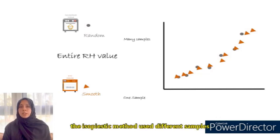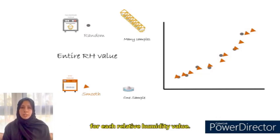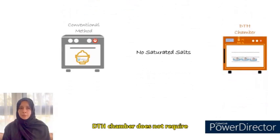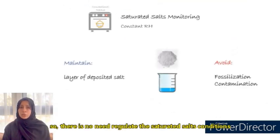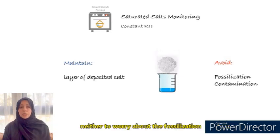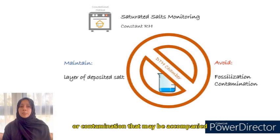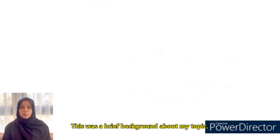The isopiestic method used different samples for each relative humidity value. The DTH chamber does not require the use of any saturated salts, so there is no need to regulate the saturated salts condition, nor to worry about efflorescence or contamination that may be accompanied with the use of salts.